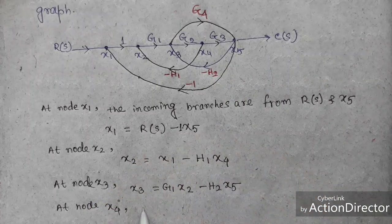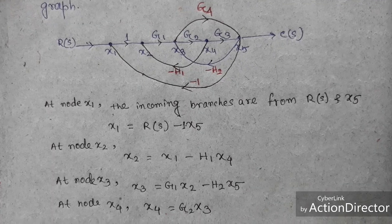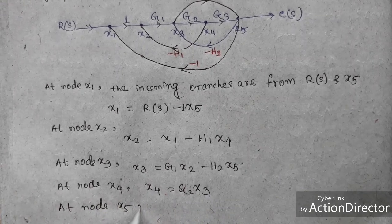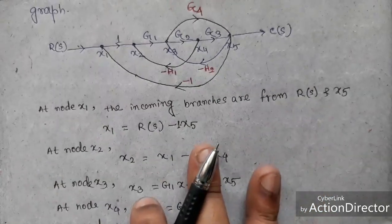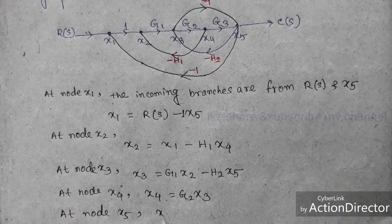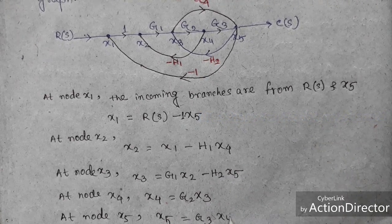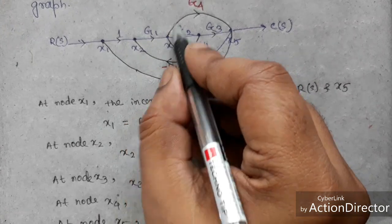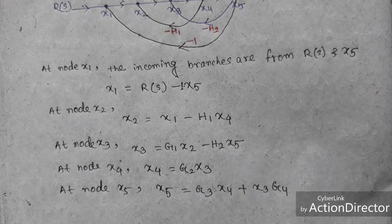At node x5, the incoming branches are x4 with gain g3, and x3 with gain g4. So we write: x5 = g3·x4 + g4·x3. We now have five equations, and using these we will draw the block diagram for each equation.